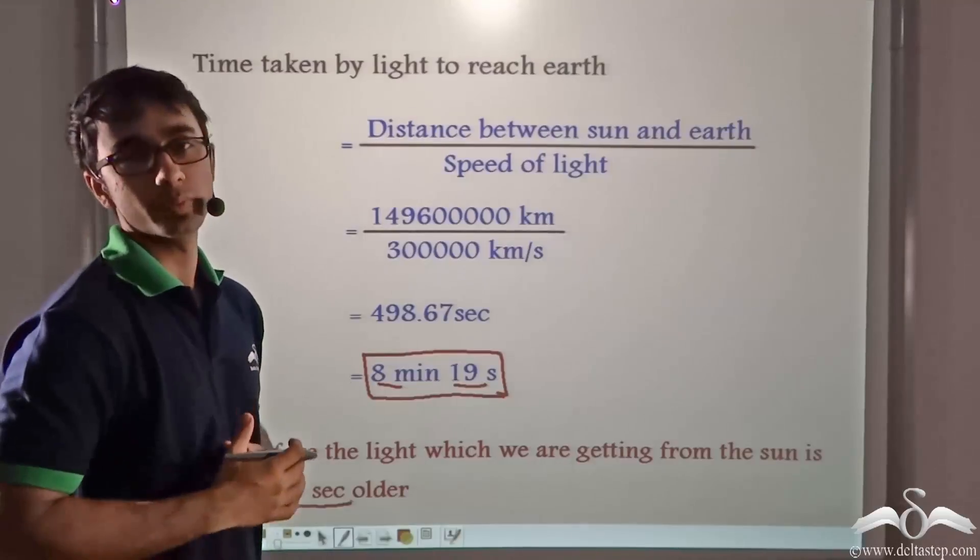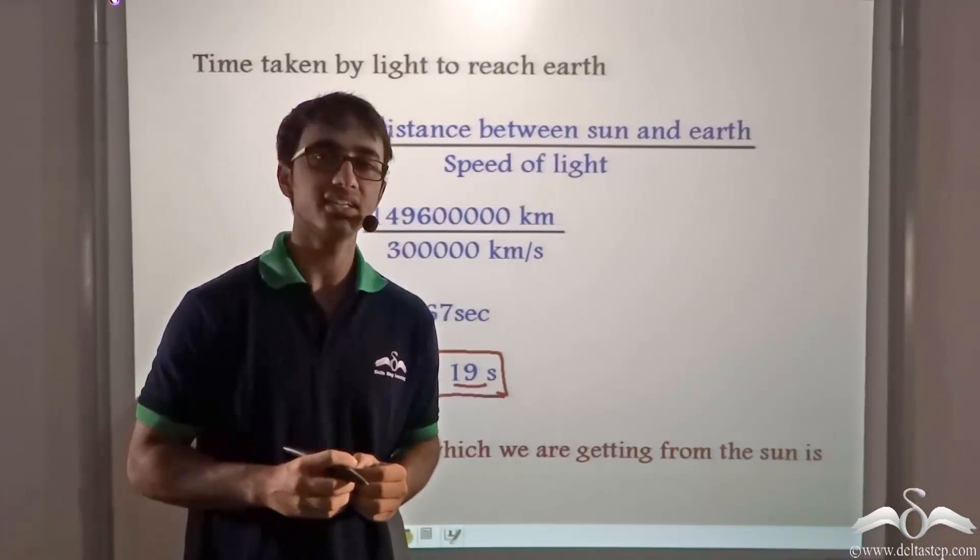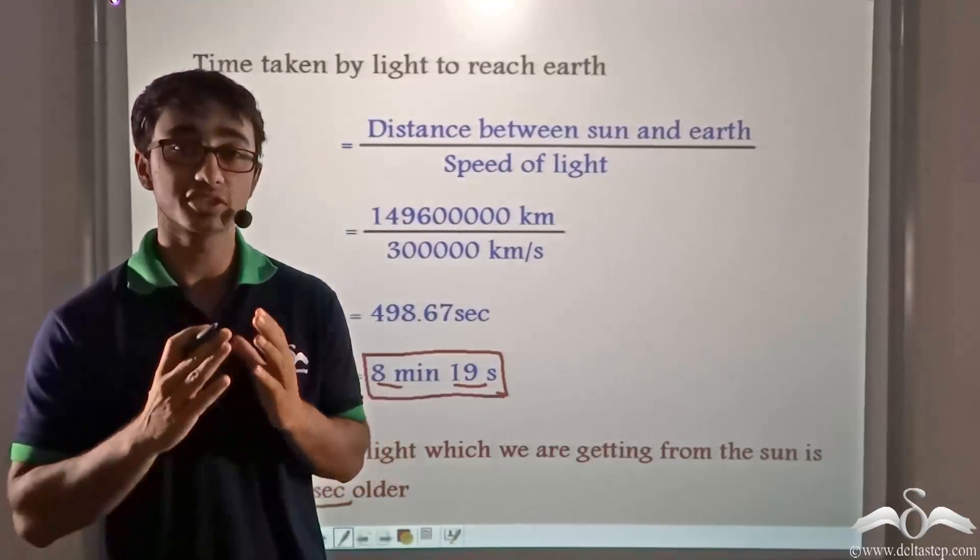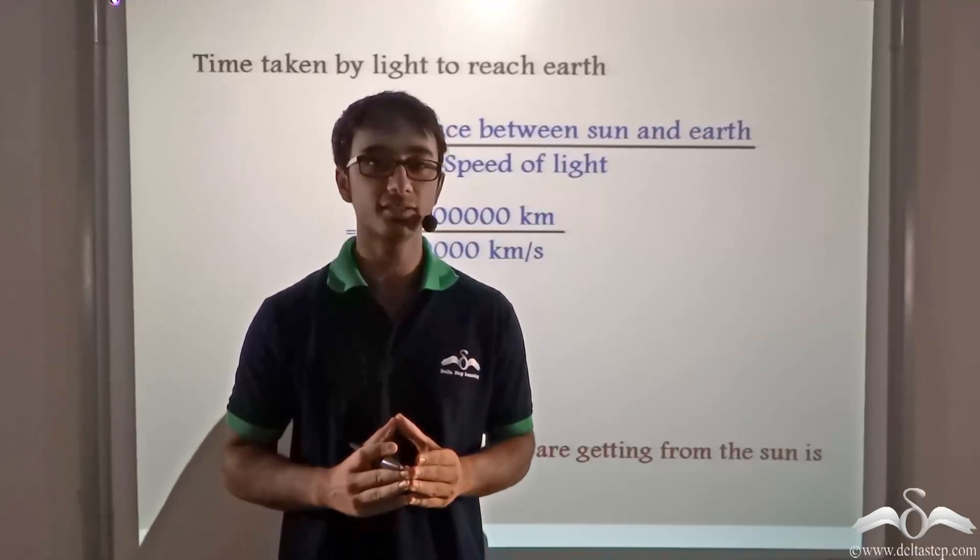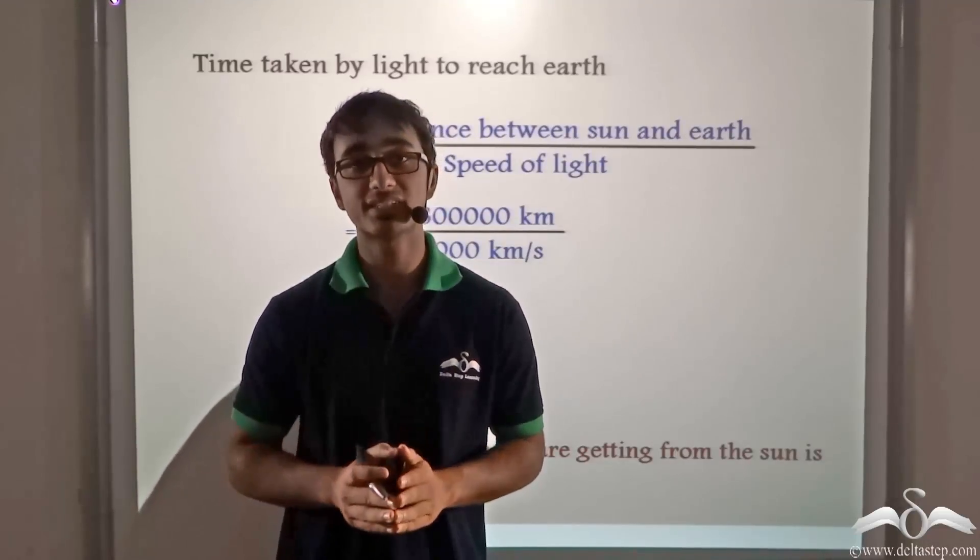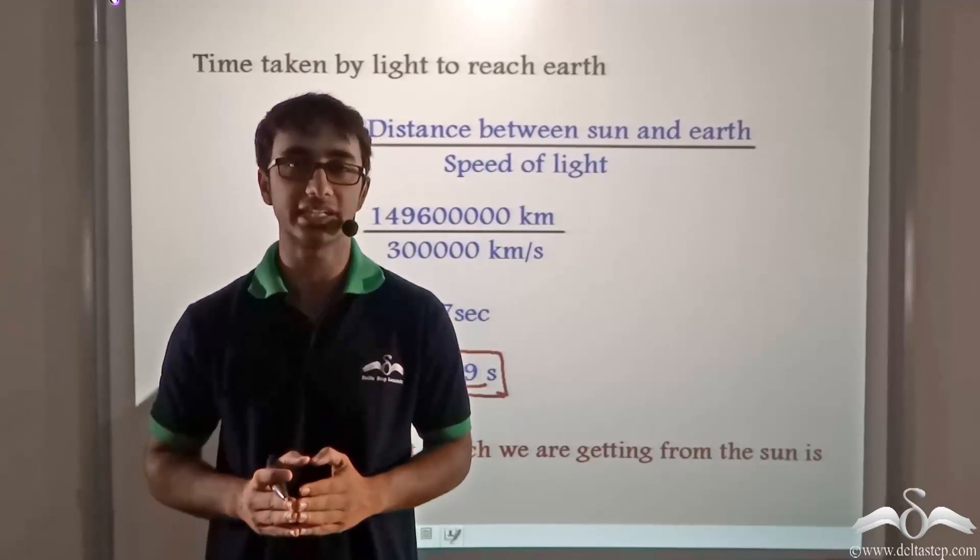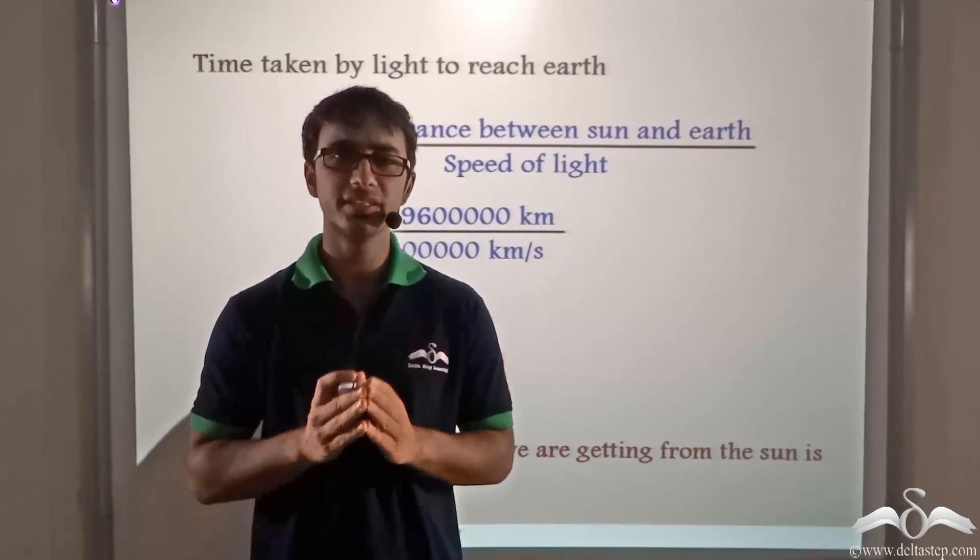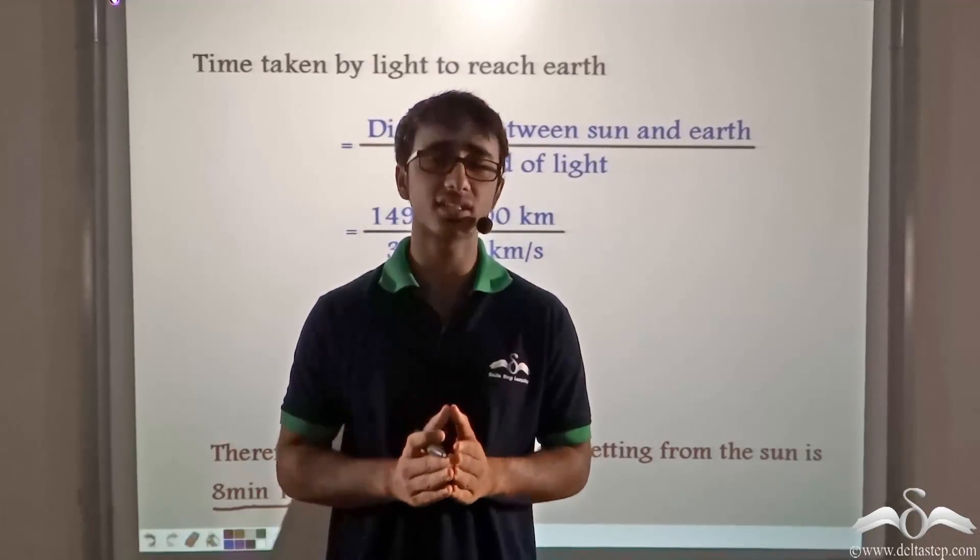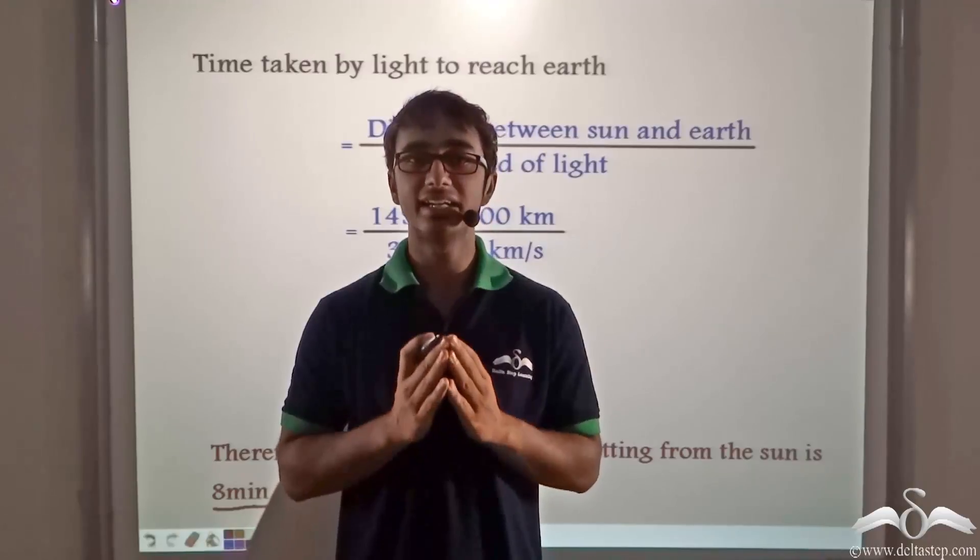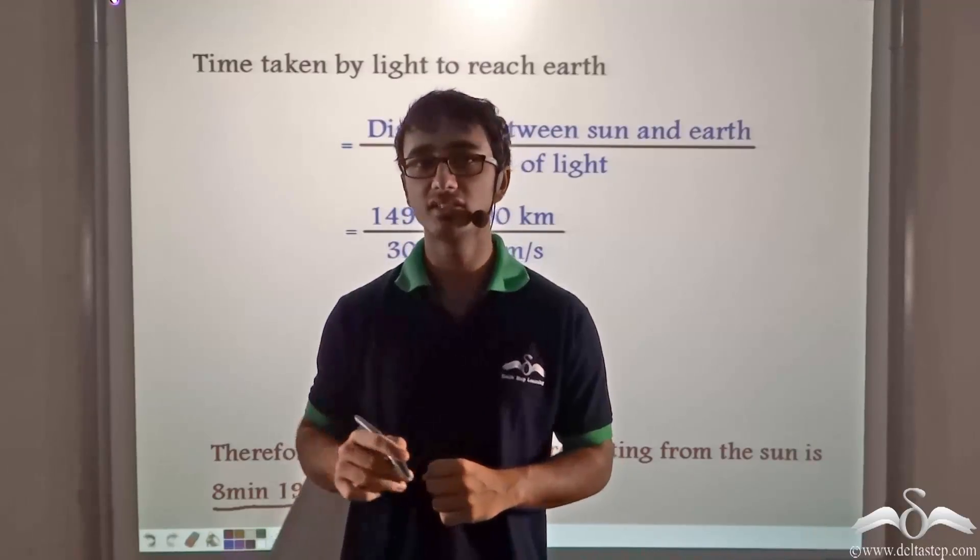So let's take a quick recap of what we learned. We learned that light is the fastest entity in the universe. It has a speed of 3 × 10^8 meters per second, or if we express it in kilometers per second, the speed is 3 × 10^5 kilometers per second. The distance between the earth and the sun is 149,600,000 kilometers, and it takes light 8 minutes 19 seconds to reach the earth from the sun.